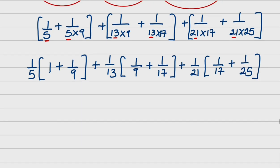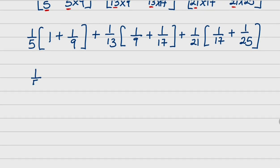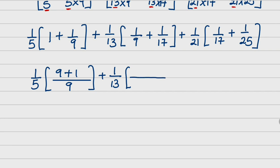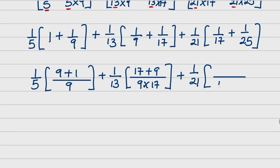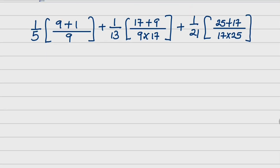So we are making good progress. Now, see what we are going to do. This is 1 over 5. I am going to work the bracket, but I will avoid the usage of a calculator by saying the LCM here is 9, so that I have 9 plus 1. Close the bracket. Then plus 1 over 13. The LCM here is 9 times 17, so I am going to have 17 plus 9. Close the bracket. Then plus I have 1 over 21, into the LCM is 17 times 25.